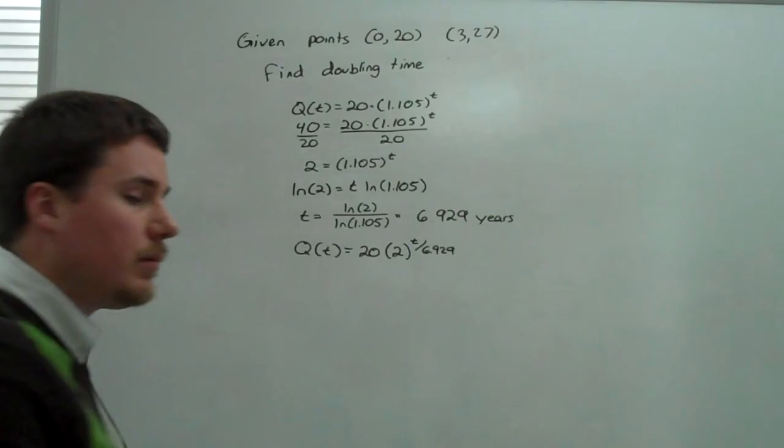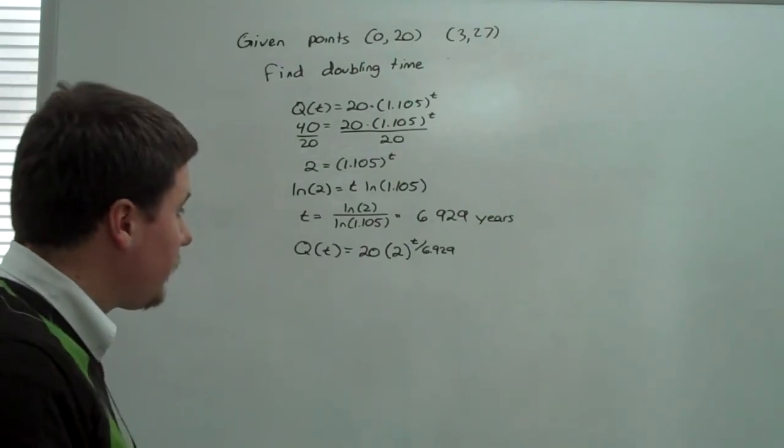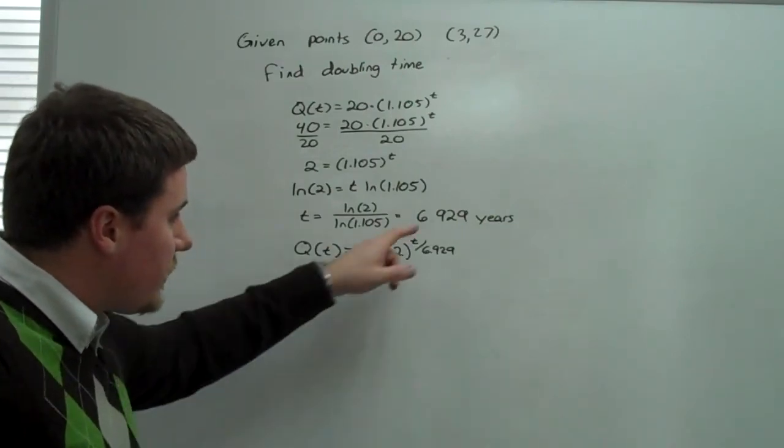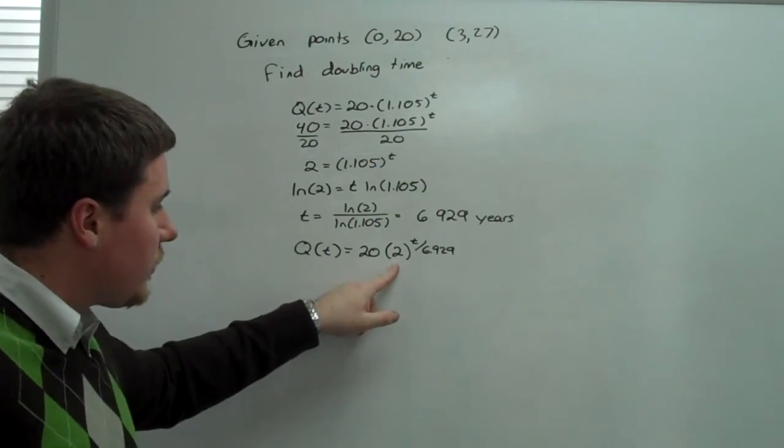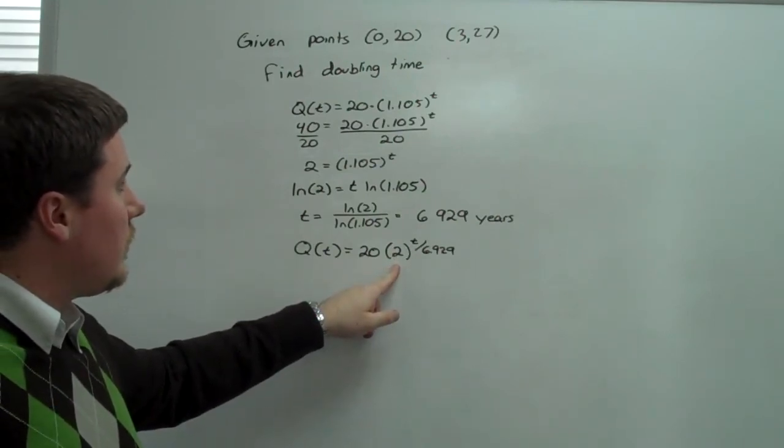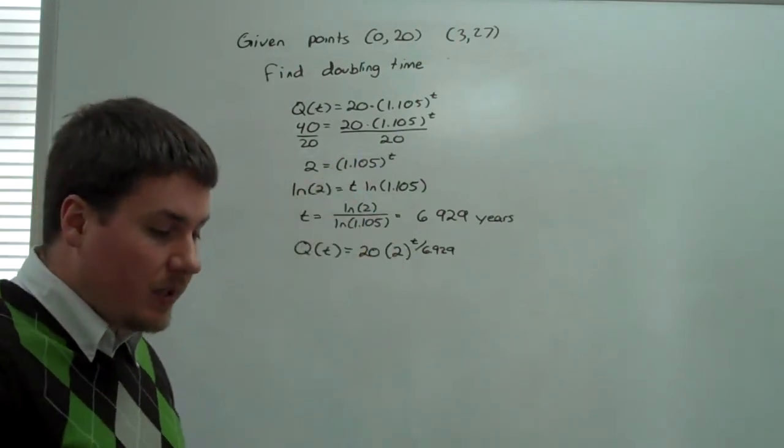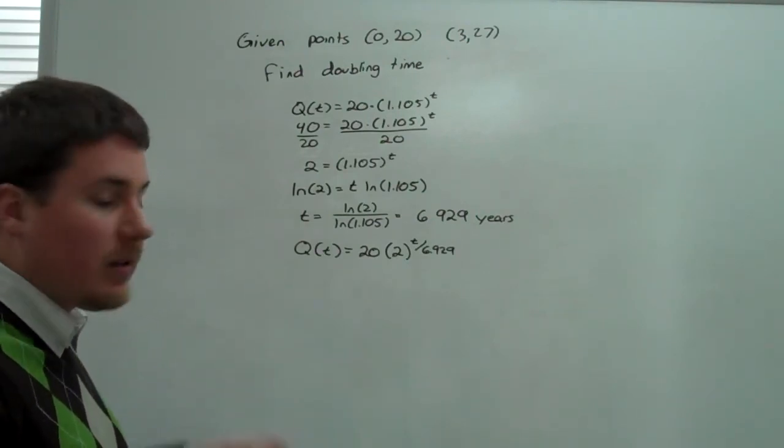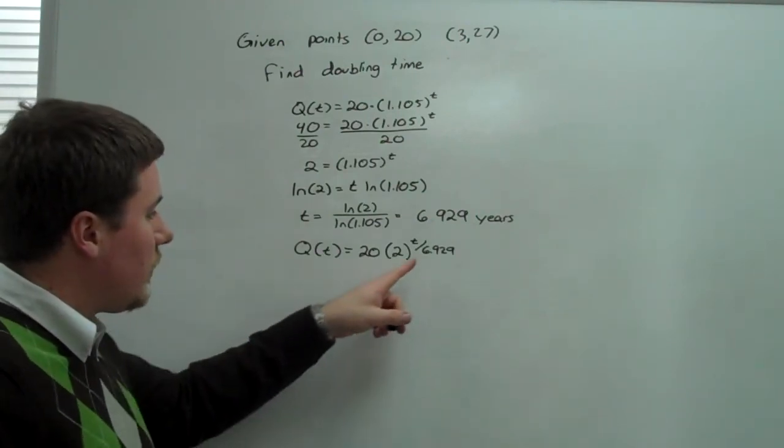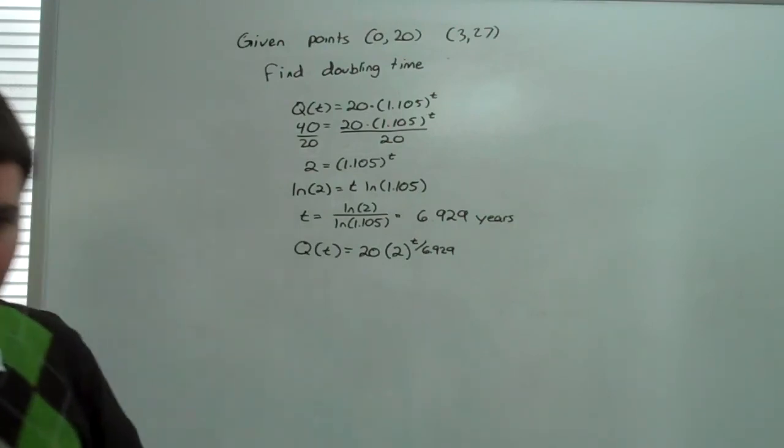This would be the doubling time equation. It says that every 6.929 years, we get twice as many whatevers, if this is a population model of people, if this is a financial model of dollars. But this is how we would write the doubling time equation.